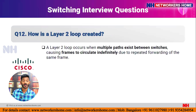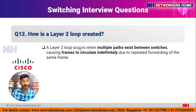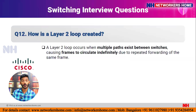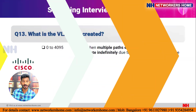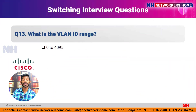Question twelve: how is a Layer 2 loop created? A Layer 2 loop occurs when multiple paths exist between switches, causing frames to circulate indefinitely due to repeated forwarding of the same frame. Layer 2 PDUs are frames, and when they keep circulating due to alternative paths, a loop is created. STP avoids this by blocking the alternative paths.